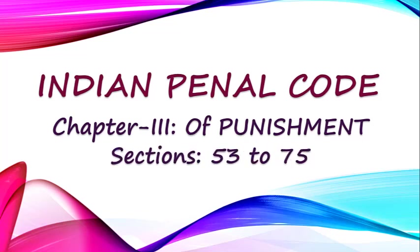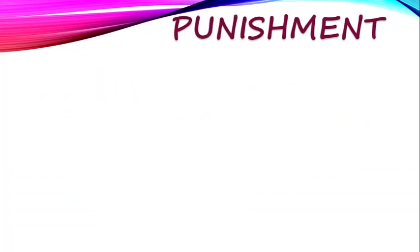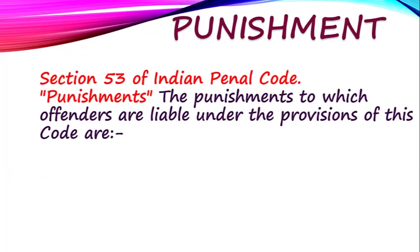Chapter 3 deals with provisions relating to punishment. Chapter 3 contains Sections 53 to 75 of the Indian Penal Code. If any offender commits a criminal offence, then what will be the punishment? Section 53 says that under IPC, there are 5 types of punishment that can be given.